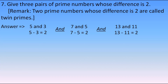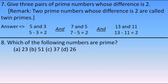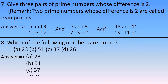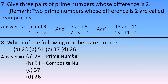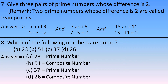The eighth question: which of the following numbers are prime numbers? As you all know, 23 is a prime number. 51 is a composite number. 37 is a prime number and 26 is a composite number. You can easily answer these if you have memorized the prime numbers.